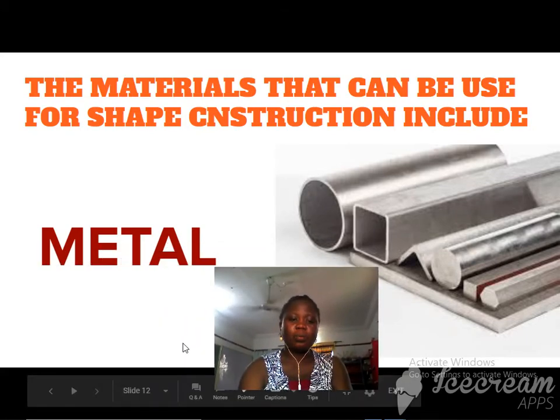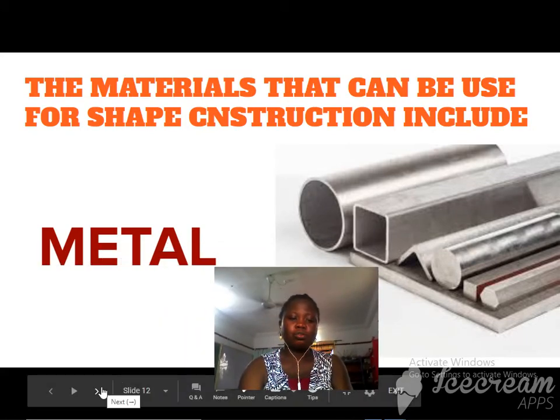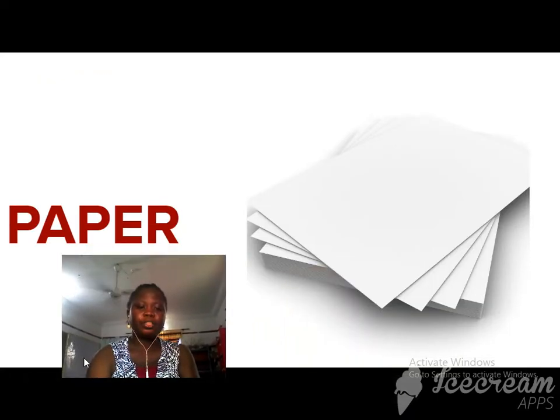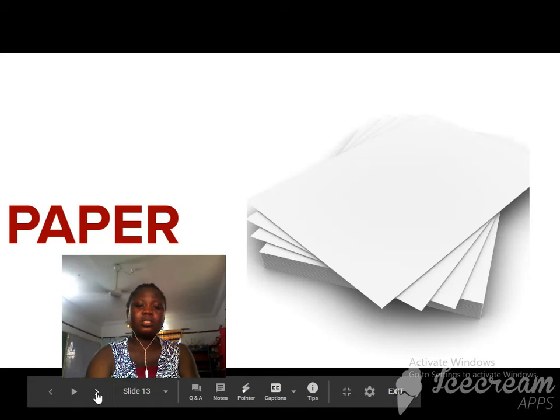This is metal. We use metal for shape construction. We use paper. This paper for shape construction.